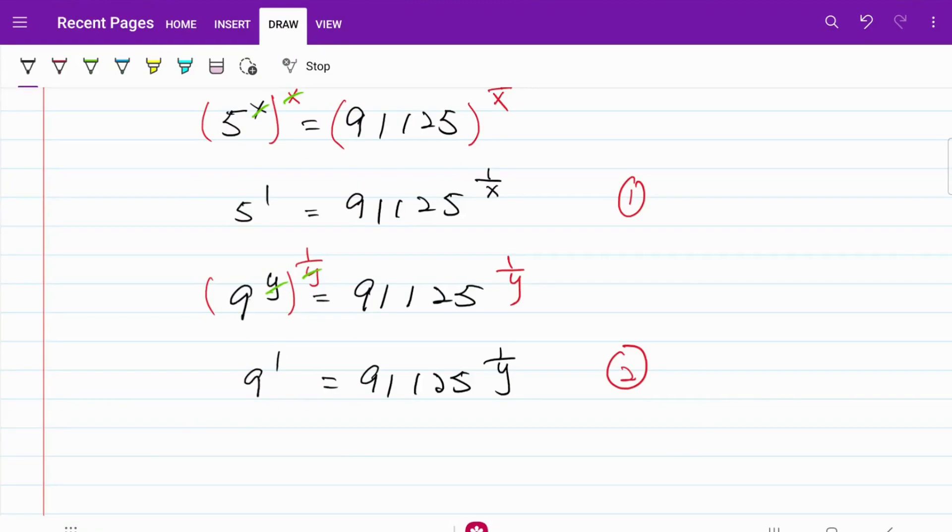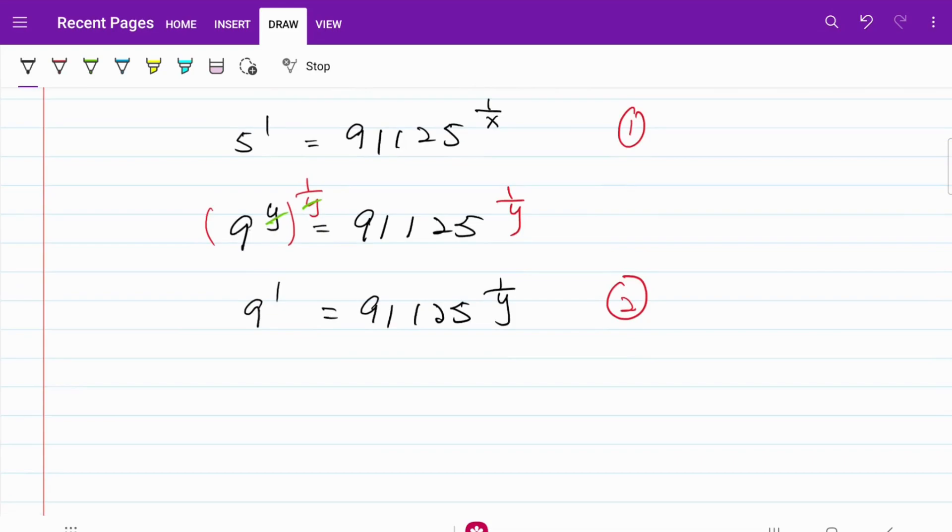For the next step, I'm just going to multiply equation 1 with equation 2. So on the left hand side, I have 5 to the power of 1 multiplied by 9 to the power of 1. On the right hand side, I have 91,125 to the power of 1 over x multiplied by 91,125 to the power of 1 over y.